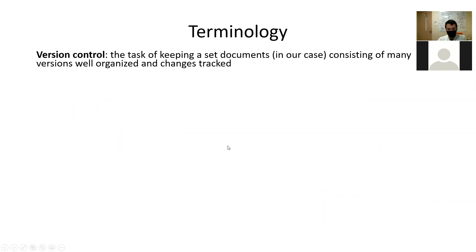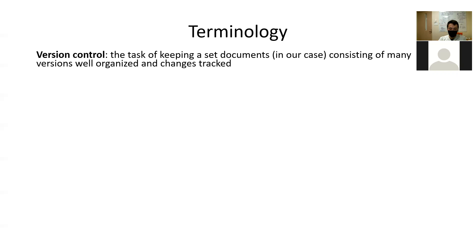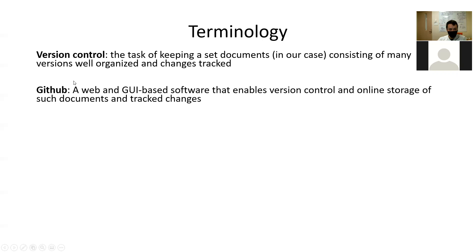Before going into the installation, I want to talk about terminology. Version control is the task of keeping a set of documents — consisting of many versions — well organized, where the changes you've made to those files are tracked in history. GitHub is a web and GUI-based software that enables this version control, and those files and tracked changes are stored online in the cloud, similar to how Dropbox has its cloud storage and web interface.